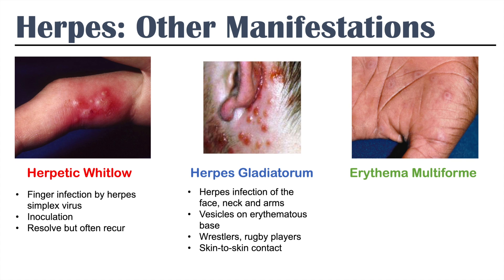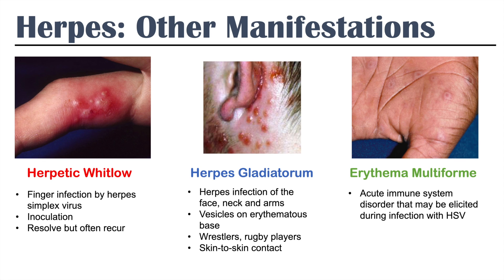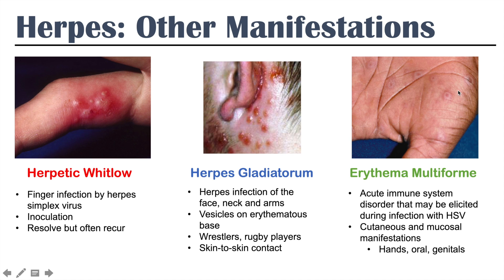The last manifestation to discuss is erythema multiforme — an acute immune system disorder that may be elicited during infection with herpes simplex virus. If you're infected on your lip, you might get odd skin or mucosal manifestations on certain parts of your body, including your hands, oral mucosa, or even your genitals. You may get this odd cutaneous manifestation, like in this picture — that's erythema multiforme.